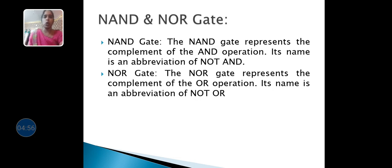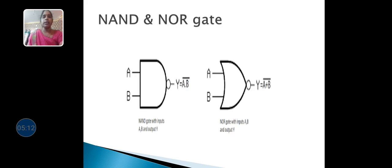The combination of NOT and AND is called a NAND gate. Next is the NOR gate. The NOR gate represents the complement of the OR operation. Its name is an abbreviation of NOT OR — that means the combination of NOT and OR is called a NOR gate. That is shown in the figure. The OR gate truth table, when complemented, gives the NOR gate. The AND gate can also be represented in the form of a NAND gate.